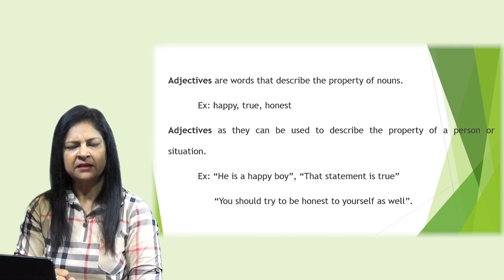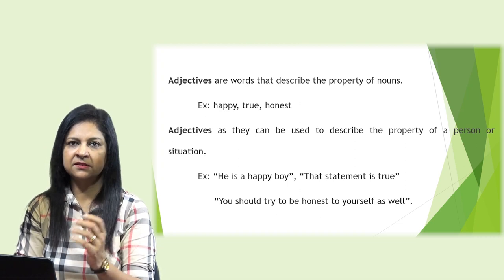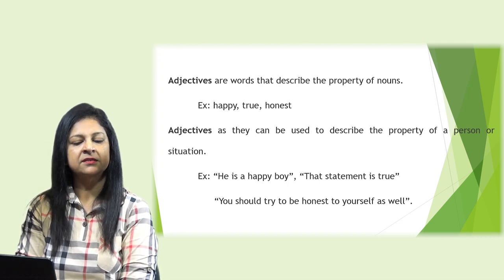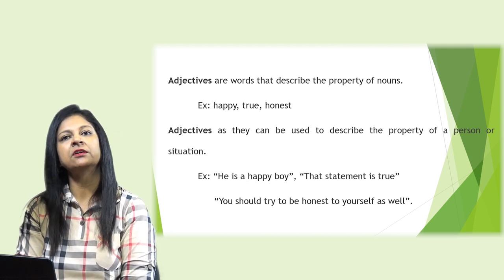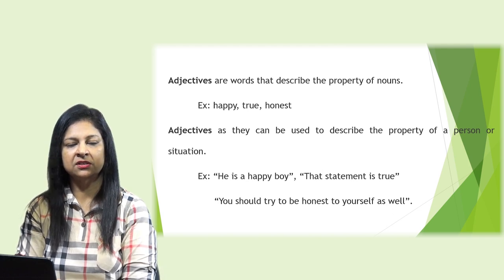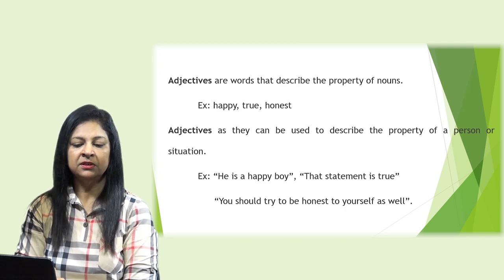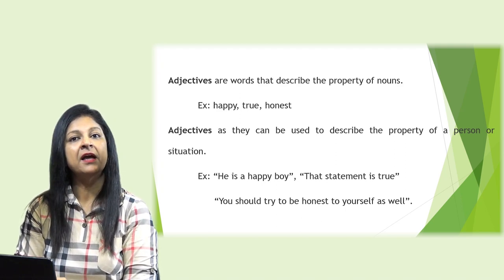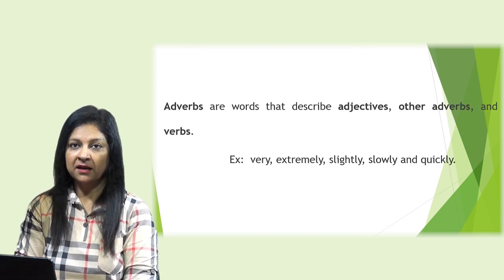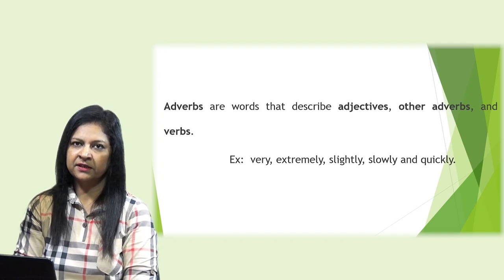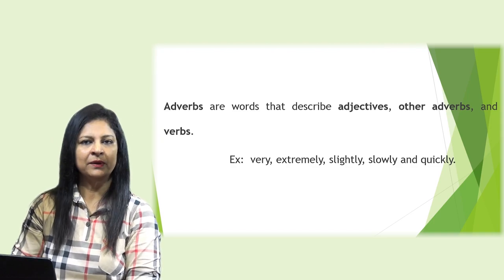Adjectives are words that describe the property of nouns. For instance: happy, true, honest. They can also describe the property of a person or situation — for example: 'He is a happy boy,' 'The statement is true,' 'You should try to be honest to yourself.' Adverbs are words that describe adjectives, other adverbs, and verbs. For instance: very, extremely, slightly, slowly, and quickly.